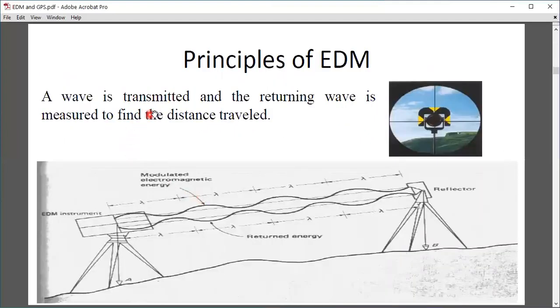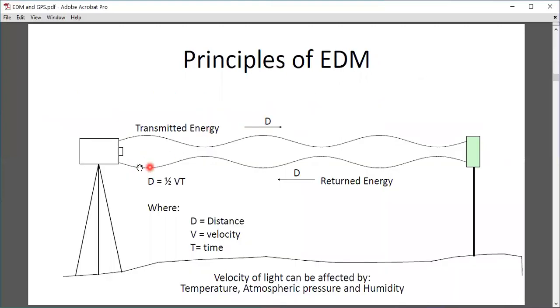The principle of EDM is: a wave is transmitted and a return wave is measured to find the distance traveled. Distance is measured with the formula d equals one-half v t, where d is distance, v is velocity, and t is time. Velocity of light can be affected by temperature, atmospheric pressure, and humidity.